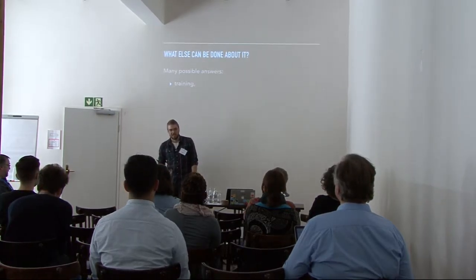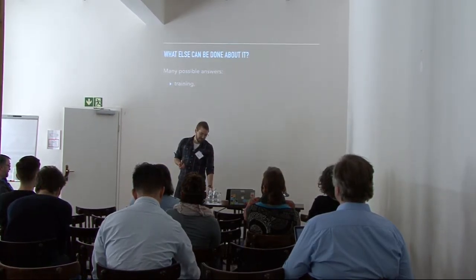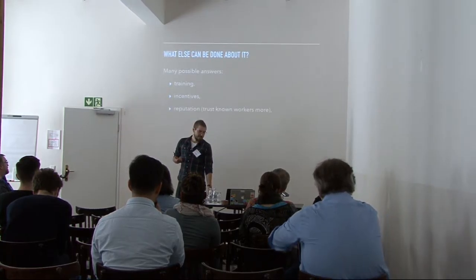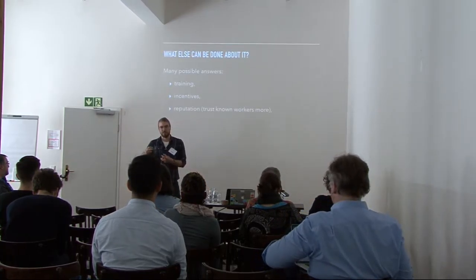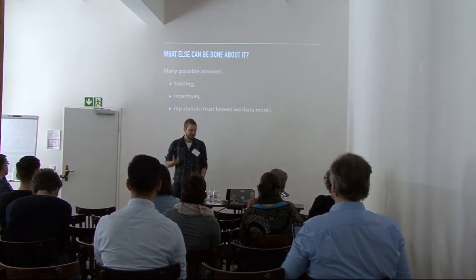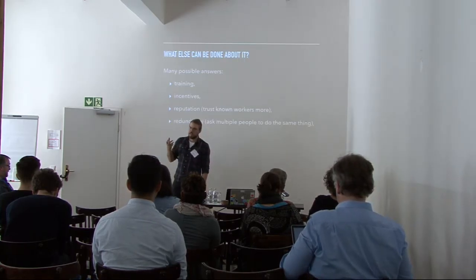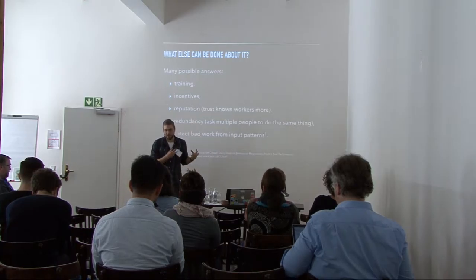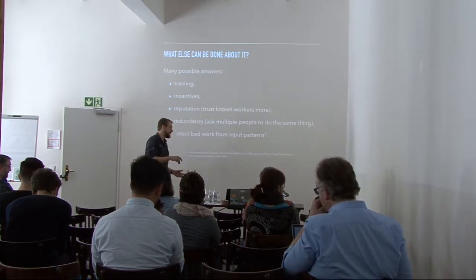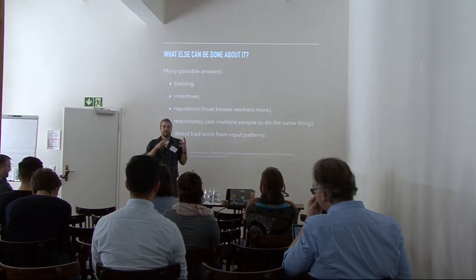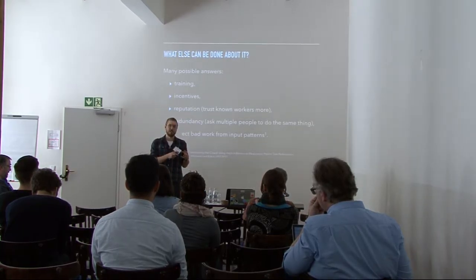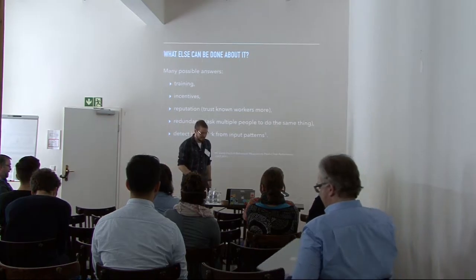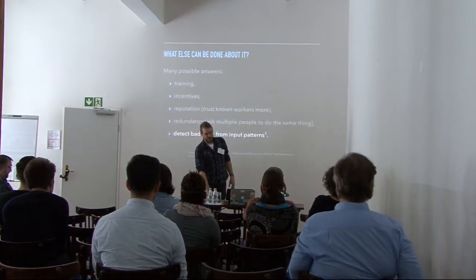What solutions can we use to deal with these things? First, training to make sure people know what to do. We can set up incentives correctly. We can track people who have been with us for a while and have a high reputation, and trust them more than others. We can have multiple people do the same thing to get some redundancy. And the technical focus of this talk is an idea based on a 2011 paper where they figured out whether people were actually doing what they were supposed to by looking at input patterns, gathering data, and training a classifier — which is also what we have done.